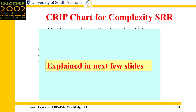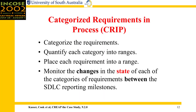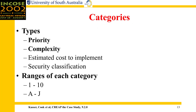Before I present the CRIP chart for complexity at the SRR, I'll explain how CRIP charts work. The CRIP process is basically as follows: one needs to categorize all the requirements for a system, then quantify each category into ranges, place each requirement in each category in a range, and then monitor the changes in the state of each of the categories of requirements between reporting milestones. Requirements may be categorized by priority, complexity, estimated cost to implement, and security classification. Categorizing requirements like this provides a check as to whether the requirement is really useful or not.